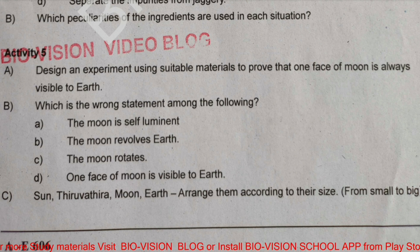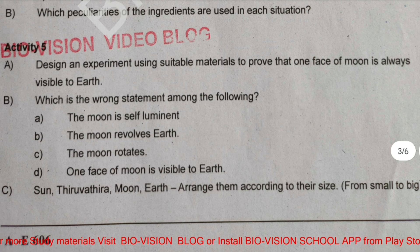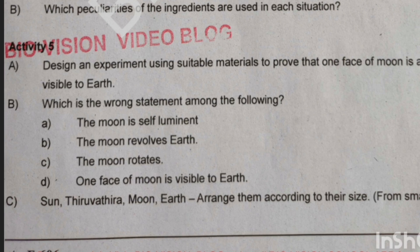Second question: Which is the wrong statement among the following? A. The moon is self-illuminant. B. The moon revolves around Earth. C. The moon rotates. D. One face of the moon is visible to Earth. The wrong statement is option A — the moon is self-illuminant.